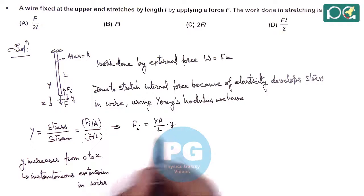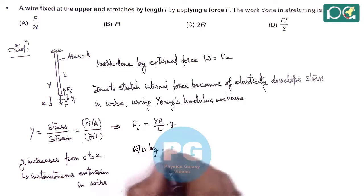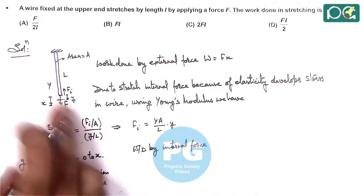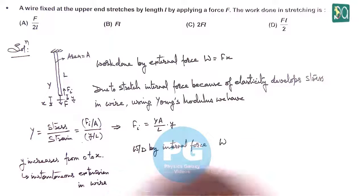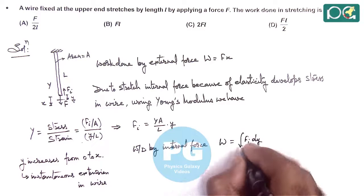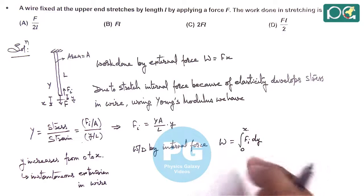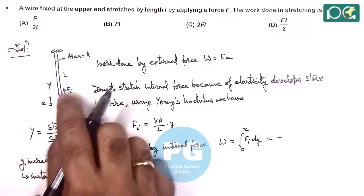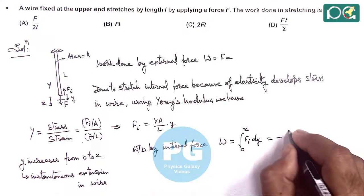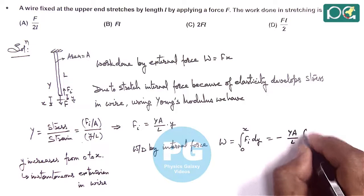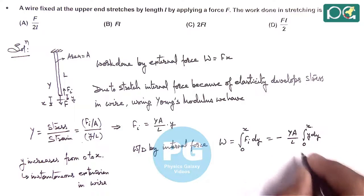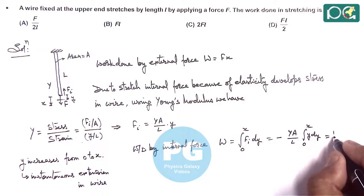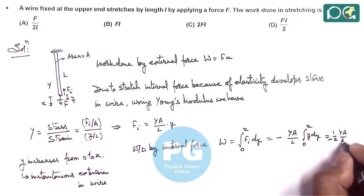From here we can see the internal force is YA/L times y, where y is the extension at any instant. If we calculate the work done against the internal force, it will be the integration of F_i dy from 0 to X. Substituting the value of F_i, noting the negative sign because extension is in the downward direction and F_i is in the upward direction, this gives minus YA/L times the integral of y dy from 0 to X, giving us minus half times YA/L times X squared.